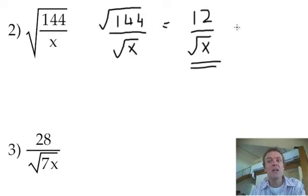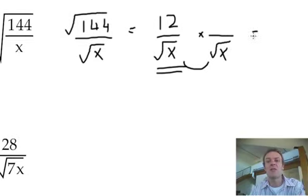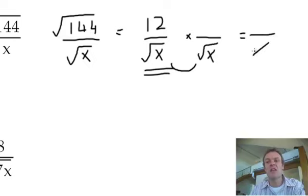So again, remember the rules. If I want to get just to an x from a root x, I multiply by another root x. So these two, when I multiply, will give me just the x.